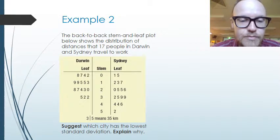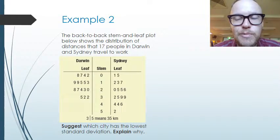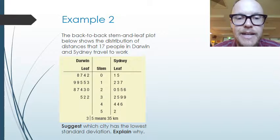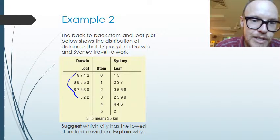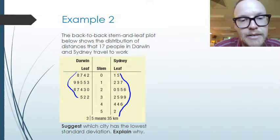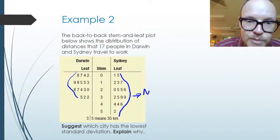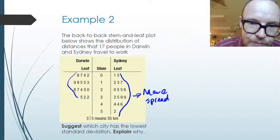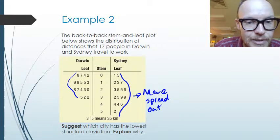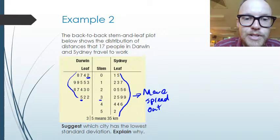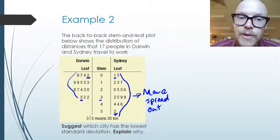Now looking at a second example using a back-to-back stem and leaf plot, we're comparing two cities and being asked which has the lowest standard deviation and why. We can assess the spread just by looking at the shape of the data. Sydney has a larger spread — it is more spread out. The range for Darwin runs from a minimum of 2 to a maximum of 35, whereas Sydney goes from 1 up to 52, so Sydney's spread is much larger.